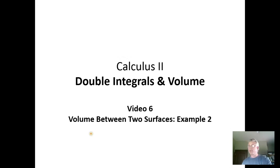In this video we want to look at a more complicated volume between two surfaces example. Set up a double integral to calculate the volume of the solid region bounded above by the paraboloid z equals 1 minus x squared minus y squared, and bounded below by the plane z equals 1 minus x.